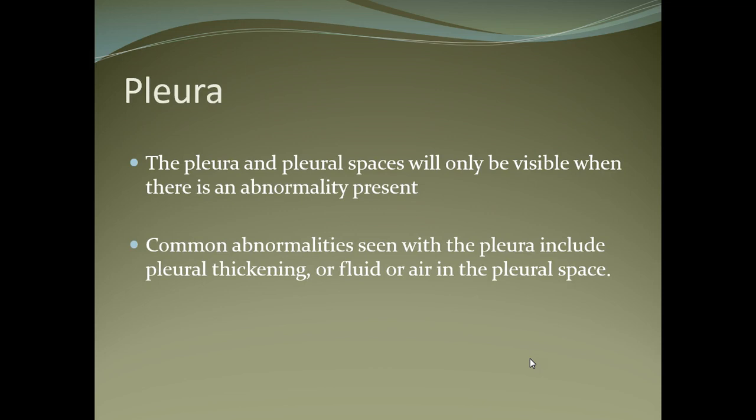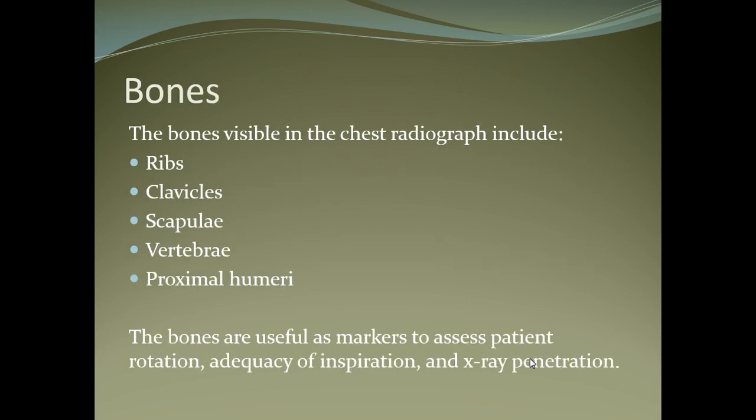The pleura and pleural spaces will only be visible when there is an abnormality present. Common abnormalities seen in the pleura include pleural thickening and fluid. In the bones, we assess the ribs, clavicle, scapula, vertebra, and proximal humeri.